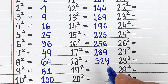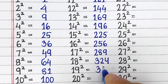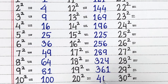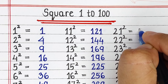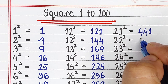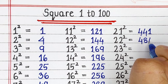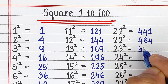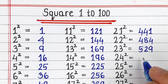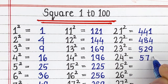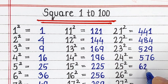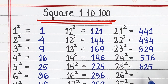Square of 19 is 361, square of 20 is 400, square of 21 is 441, square of 22 is 484, square of 23 is 529, square of 24 is 576, square of 25 is 625.